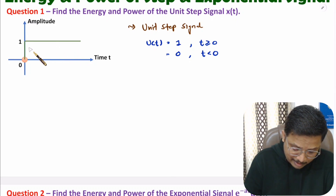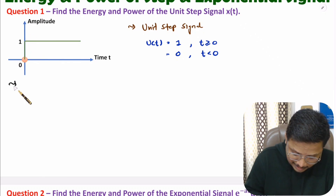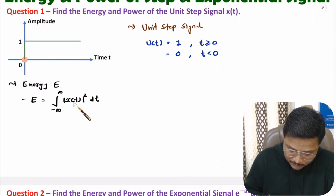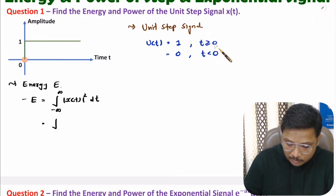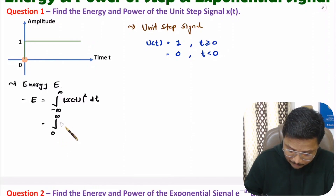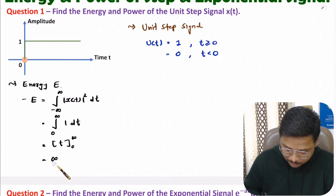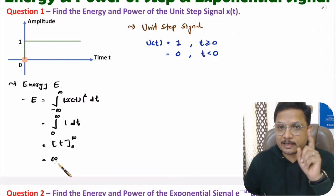Let us identify the energy of this signal. Energy E can be calculated by integration from minus infinite to plus infinite of the square of the function. Here we have signal x(t) that is unit step signal, where for t greater than or equal to zero the limit goes from zero to infinite, and the square of the amplitude is one squared. If you integrate this, then the integration will be t, where the limit is from zero to infinite. So this value is infinite. As it is infinite, one can say the given signal is not an energy signal.